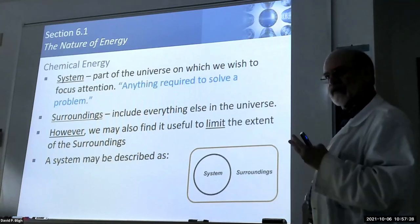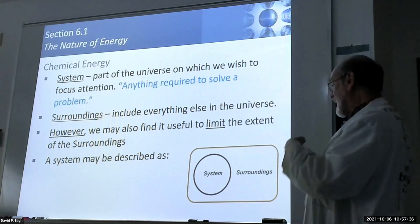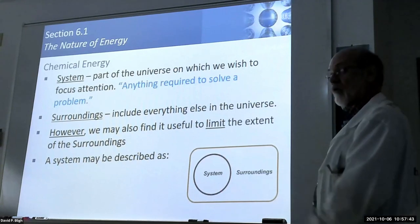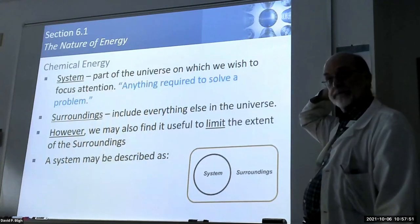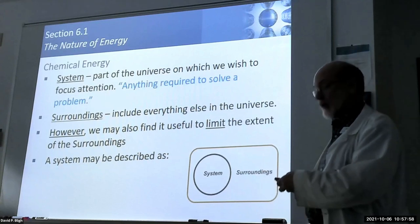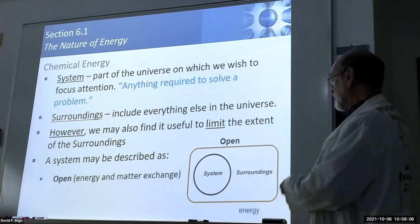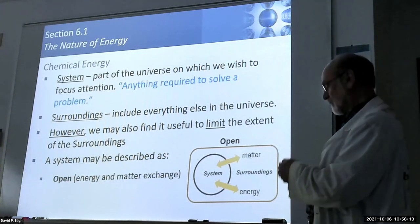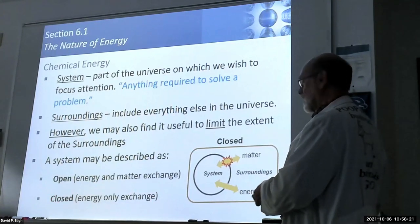There are three ways to describe a system based upon the boundary between the system and the surroundings. An open system means energy can cross the boundary and matter can cross the boundary too. This is common in the natural world, especially in biological systems. A closed system simply allows energy to move but not matter.